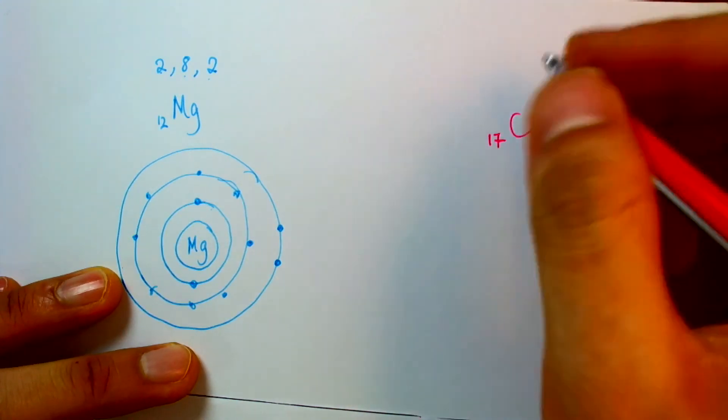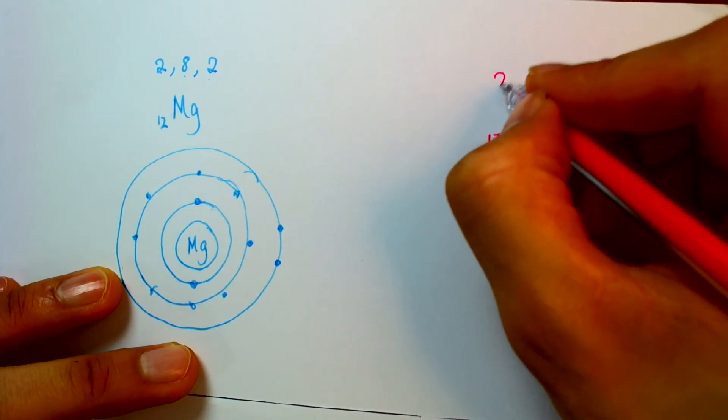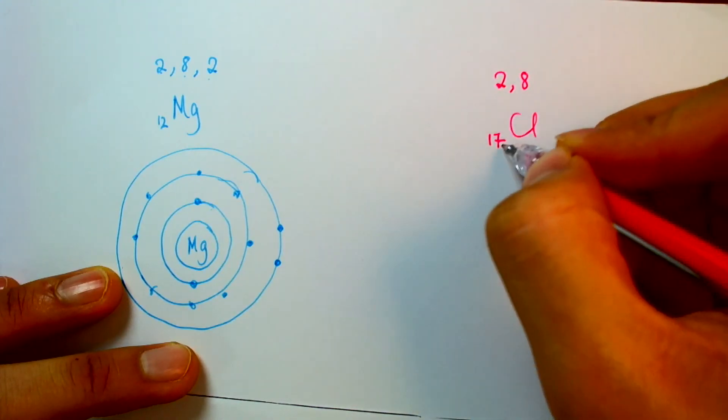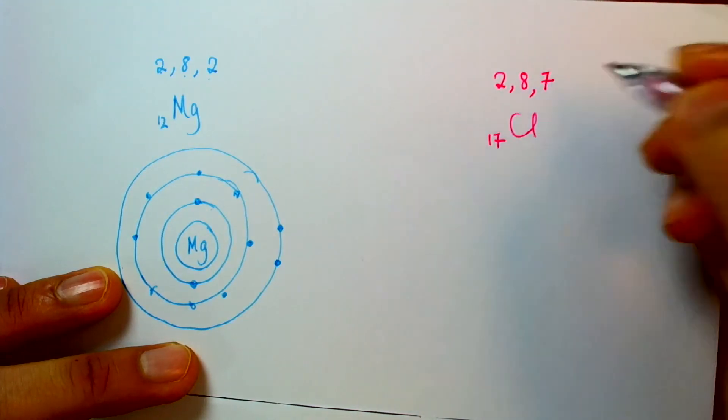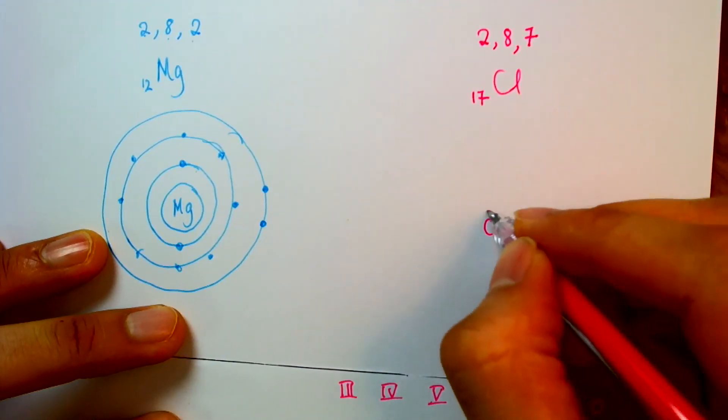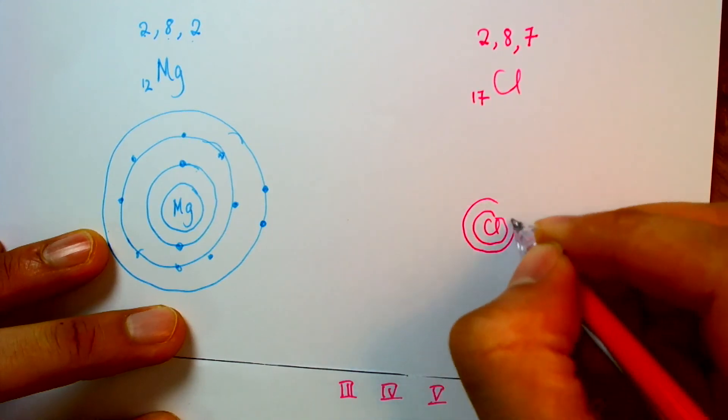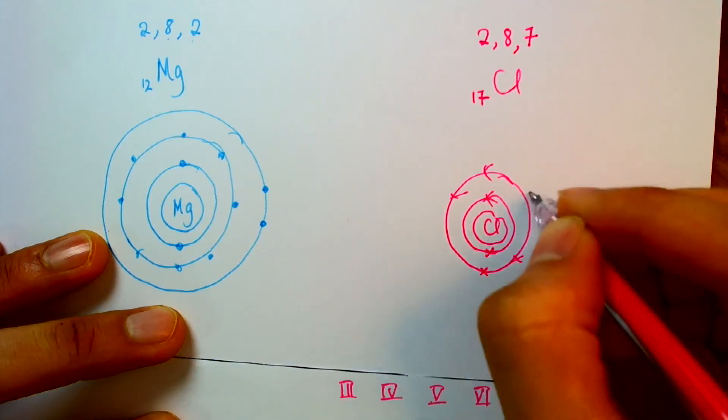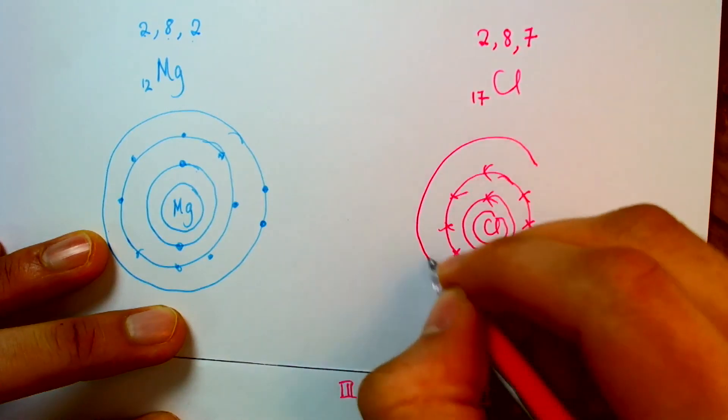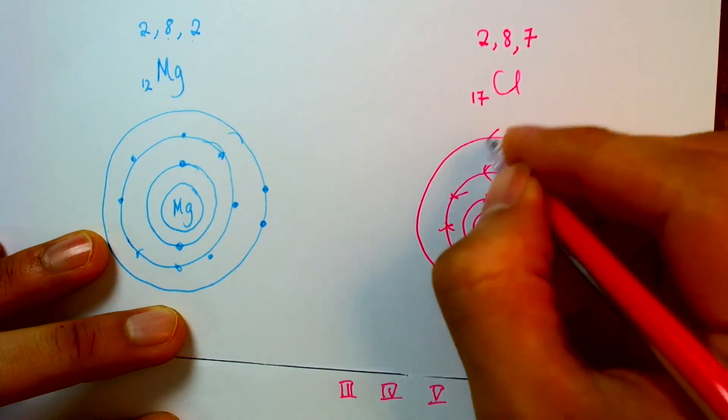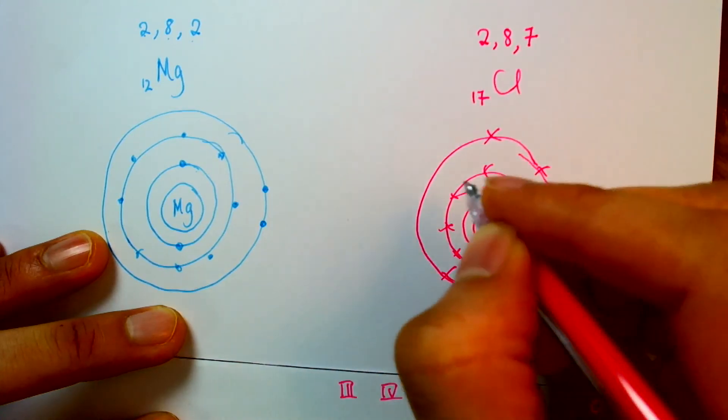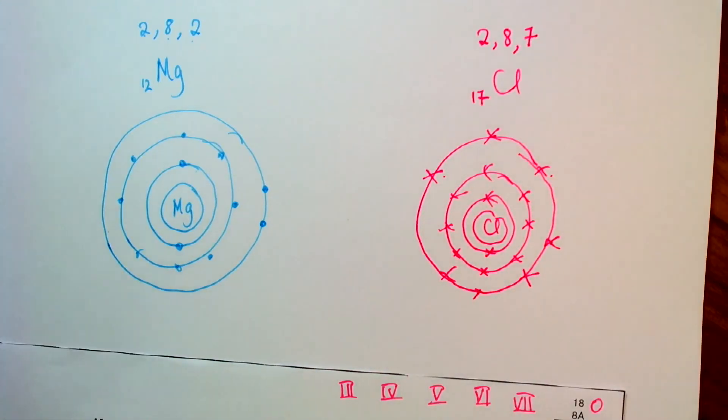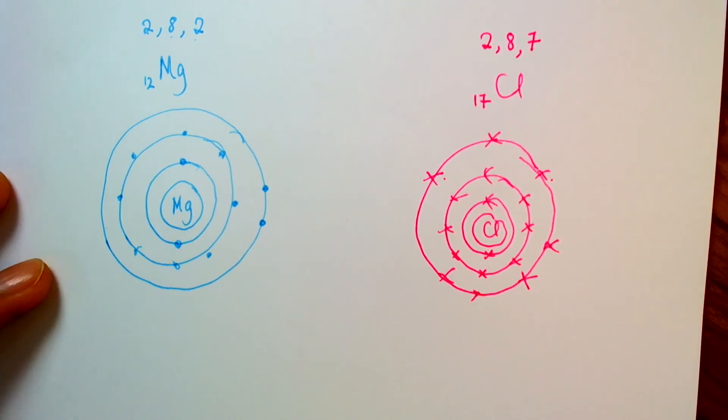So let's take a look at that. Chlorine element number 17. So it has electronic configuration 2, 8. 2 and 8 gives me 10. So I have 7 left over to make up the 17 electrons. So let's draw chlorine. It's got 2, 8, and 7. 1, 2, 3, 4, 5, 6, 7.